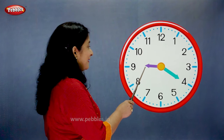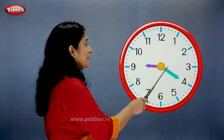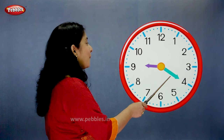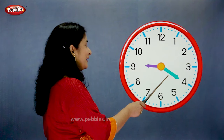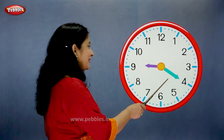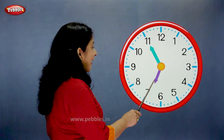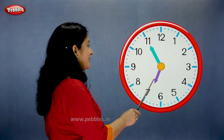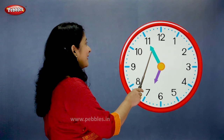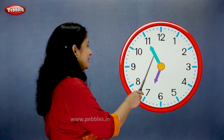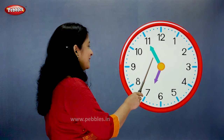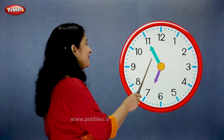The hour hand is on 9. The minute hand is on 4. So we say the time is 20 past 9. The hour hand is moving towards 7. The minute hand is on 11. So we say the time is 5 to 7.